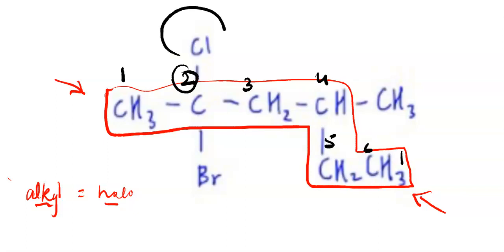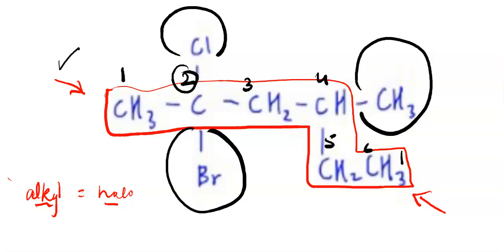So from this side, I get branch on 5 and 3 and 5, and from this side, I get 2 and 4. So I will prefer to number from this side.